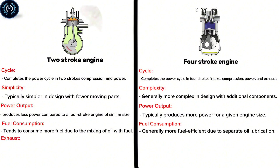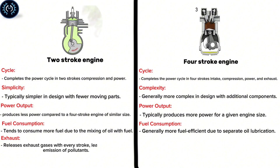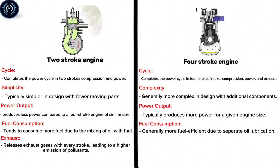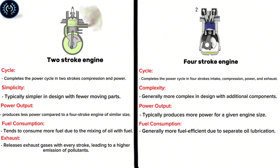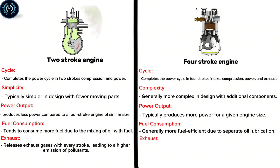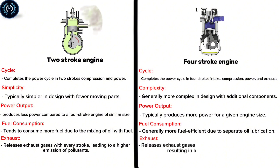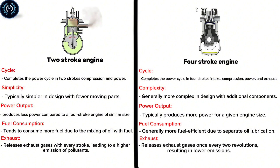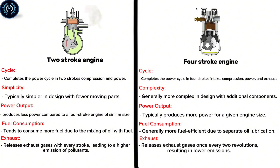Exhaust – the two-stroke engine releases exhaust gases with every stroke, leading to a higher emission of pollutants. The four-stroke engine releases exhaust gases once every two revolutions, resulting in lower emissions.